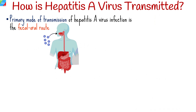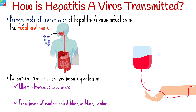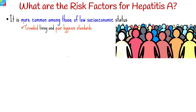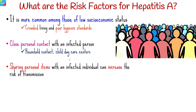The primary mode of transmission of hepatitis A virus infection is the fecal-oral route. Parenteral transmission has been reported in illicit intravenous drug use and following the transfusion of contaminated blood or blood products. Hepatitis A infection is more common among those of low socioeconomic status, where crowded living and poor hygienic standards are likely to facilitate viral spread through close personal contact, including among household contacts and child day care centers.